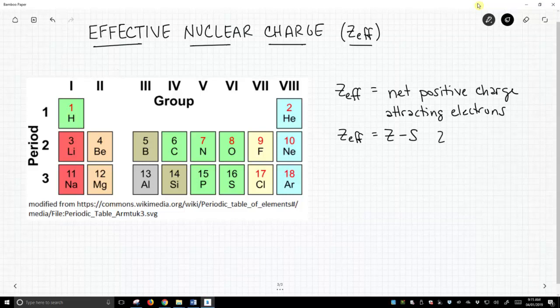Z is equal to the number of protons in your atom. Note, that's also equal to the atomic number. So if you know the atomic number, you know how many protons are also in the nucleus.